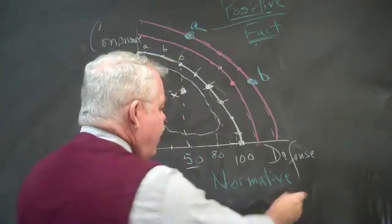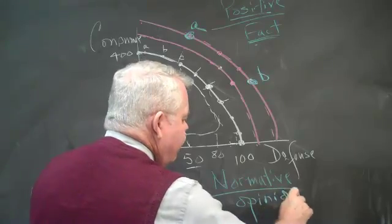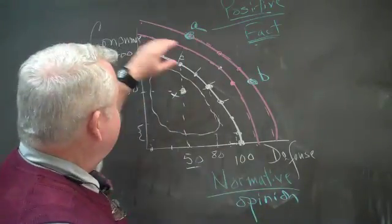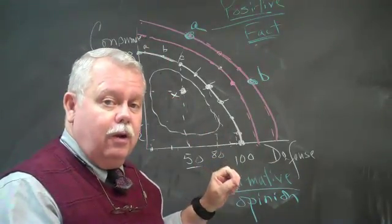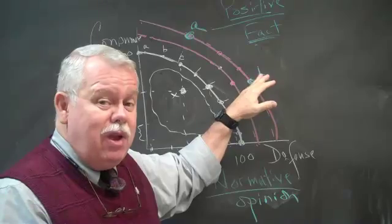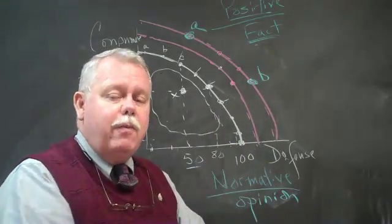Normative economics is more opinion. I think we ought to be at point A because consumer goods are more important to us than defense goods. Alternatively, I think we ought to be at point B because we need more defense. Defense is very important. And so we have a difference of opinion now.